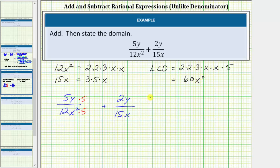Now looking at the second fraction, to write an equivalent fraction with a denominator of 60x squared, we need to multiply the numerator and denominator by 4x because 15x times 4x equals 60x squared. Notice now both denominators are 60x squared.